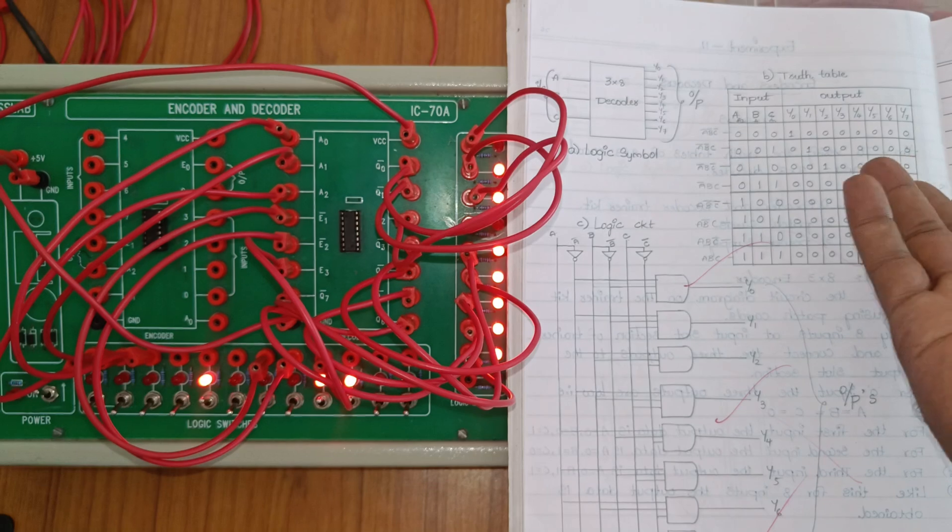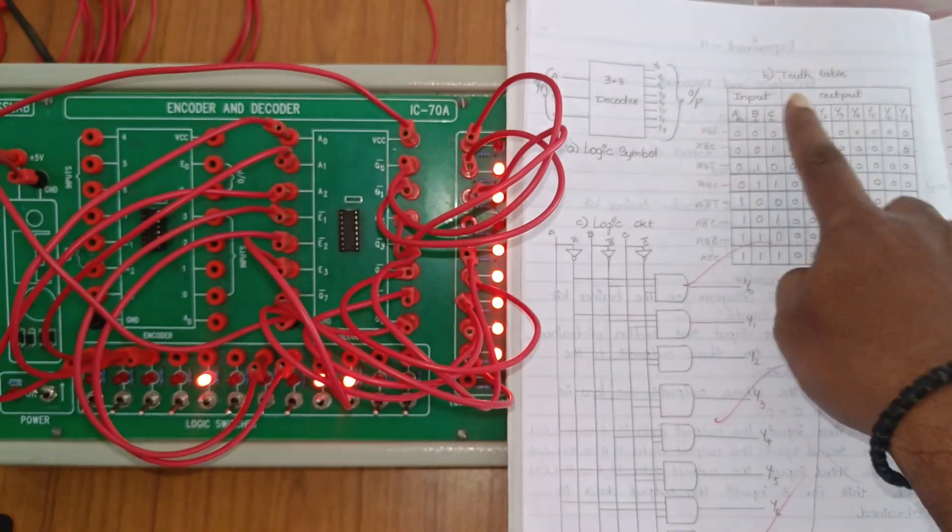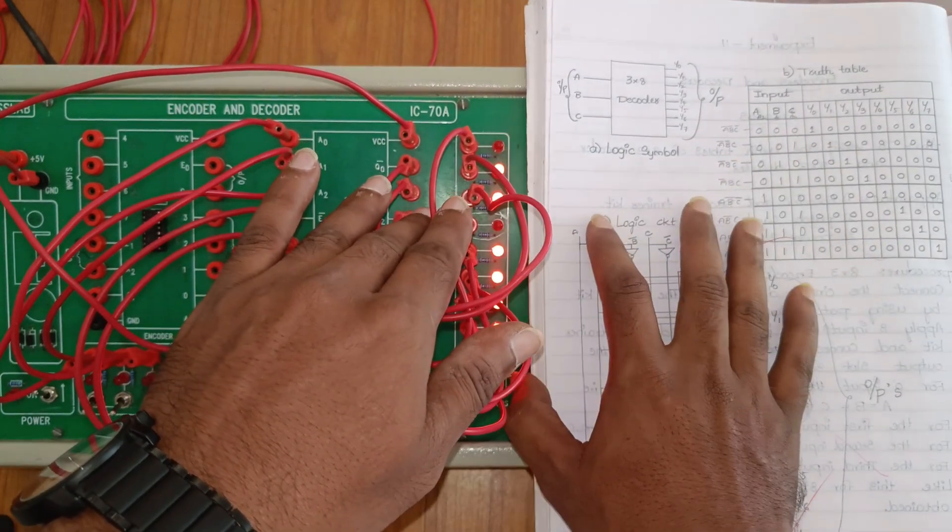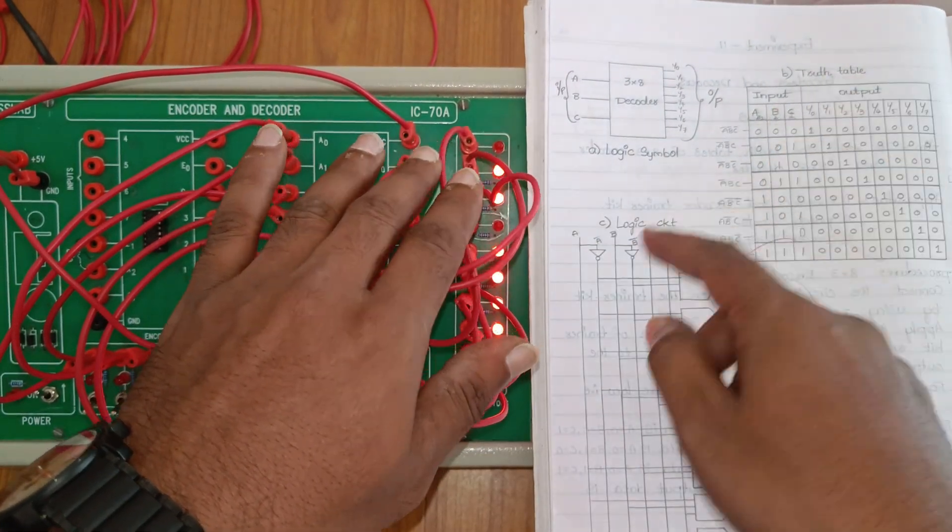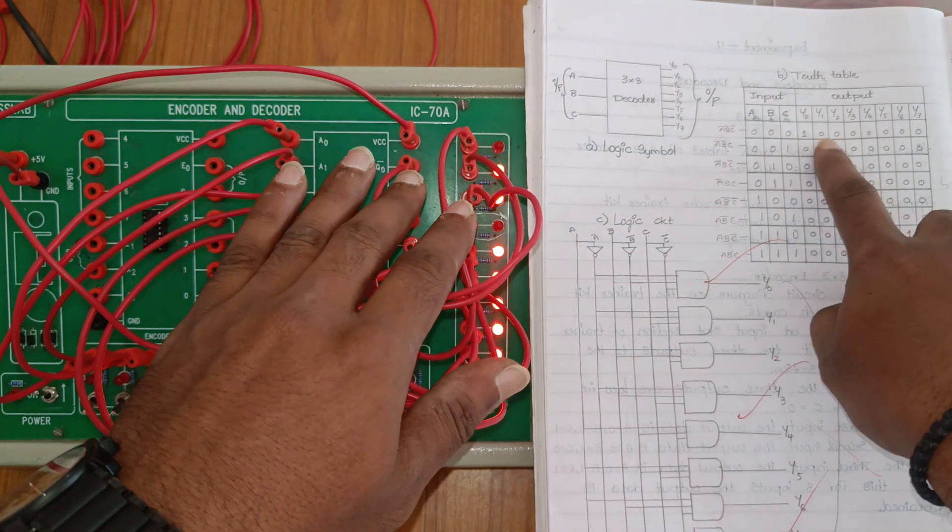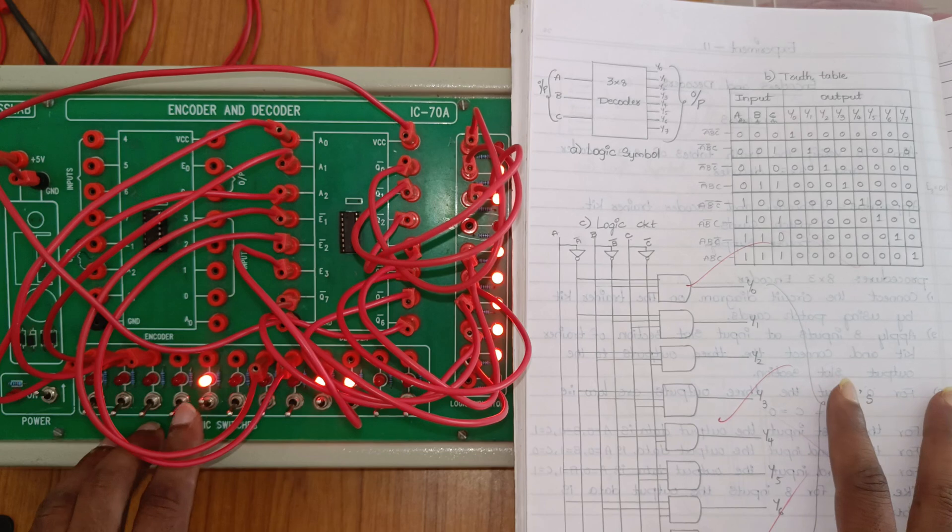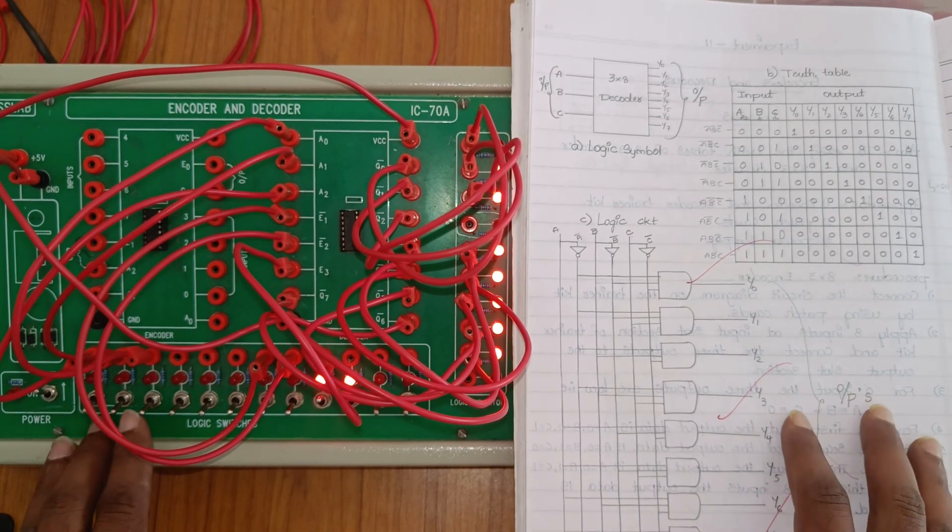Q0 bar - when Y0 is one, the complement is zero. The remaining outputs show ones. These are reverse or complement values. Next, for input data 001...